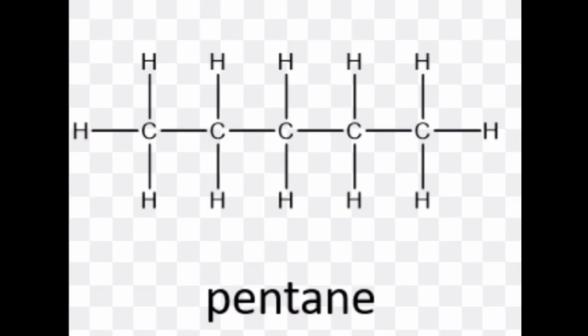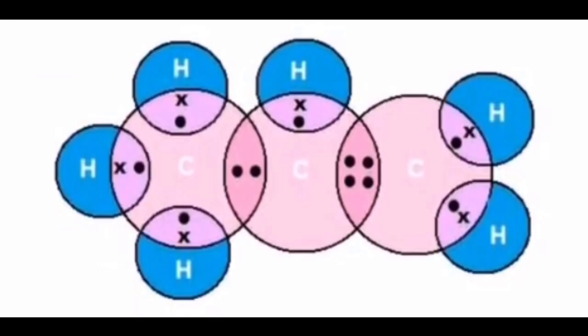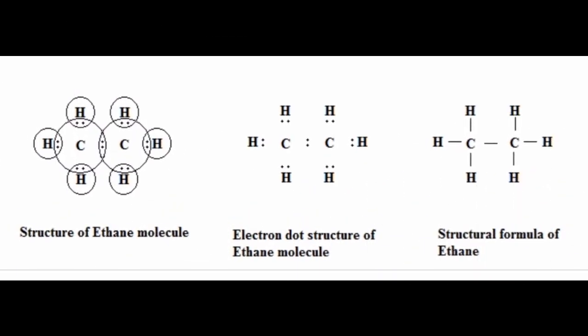Question 1: Draw the electron dot and bond structure for pentane and propene. You can see here the pentane bond structure, the pentane dot structure, the propene dot structure, and the propene bond structure. Question 2: Draw the electron dot and bond structure for ethane. How many bonds are necessary between the two carbon atoms to satisfy their valency? One bond is necessary, as you can see in the structure of ethane.